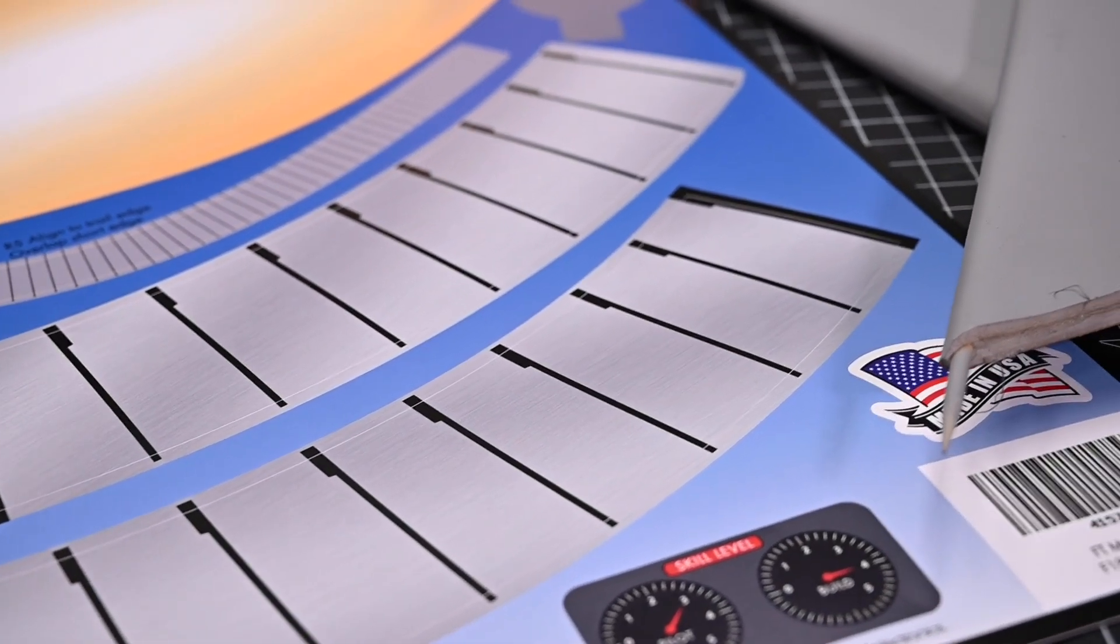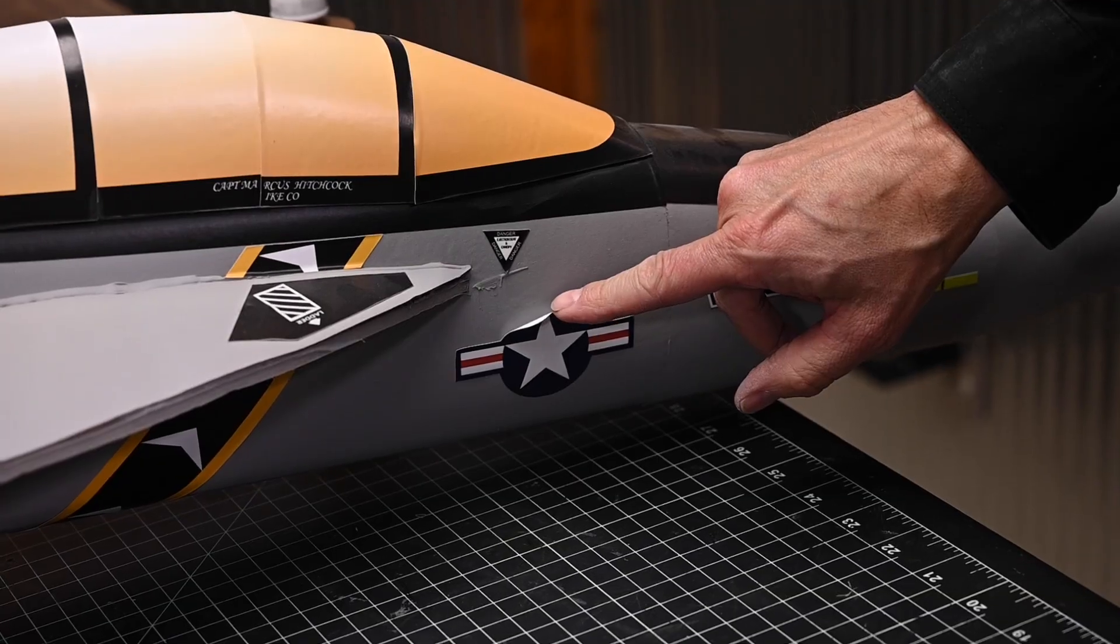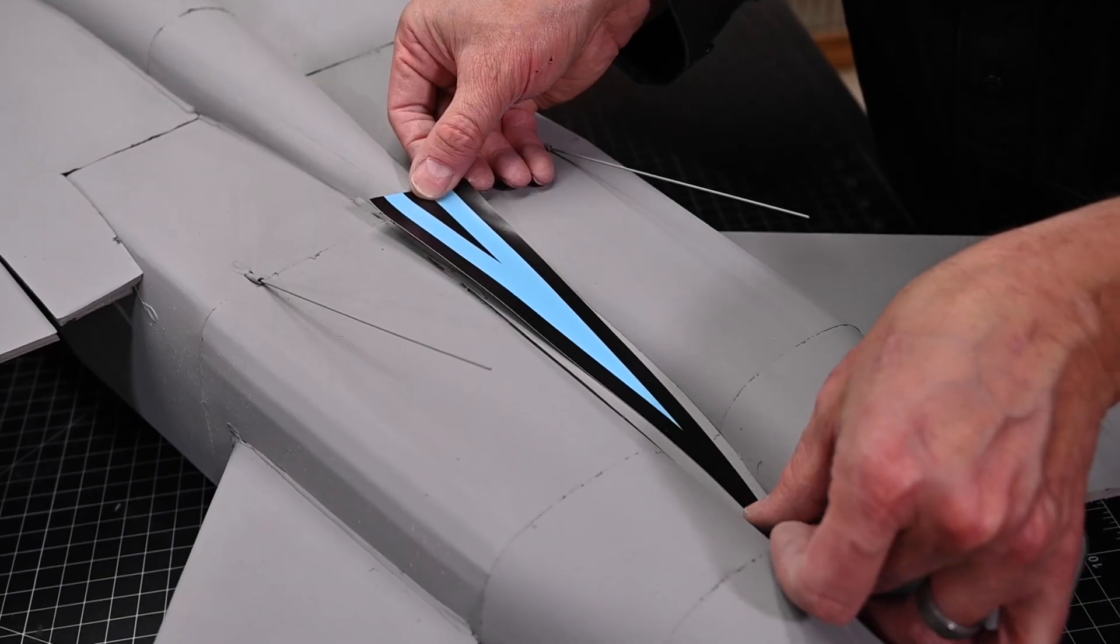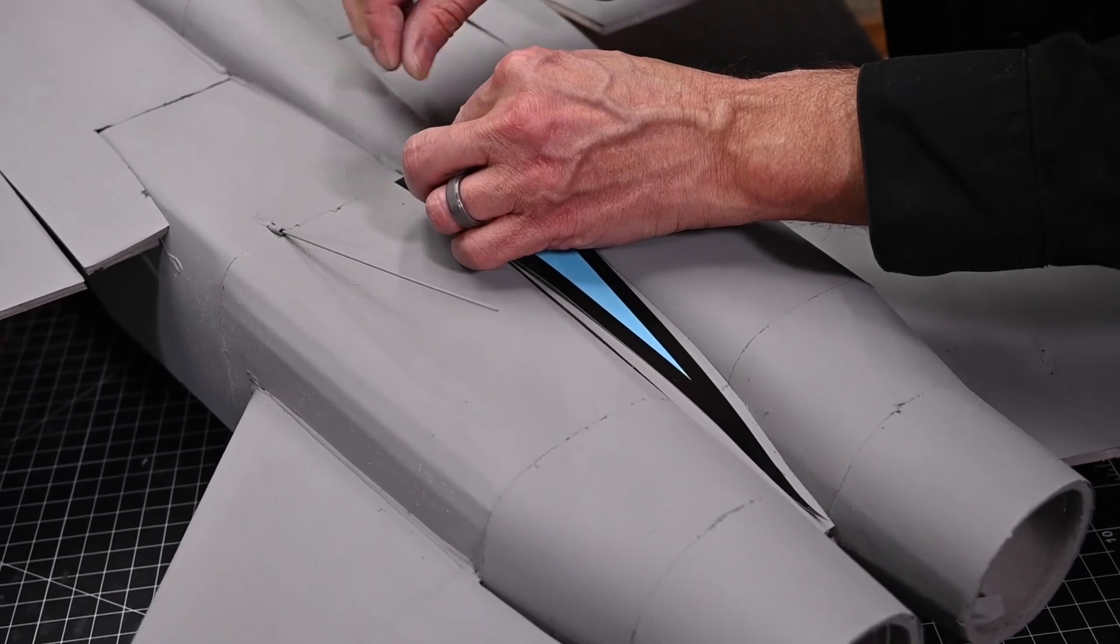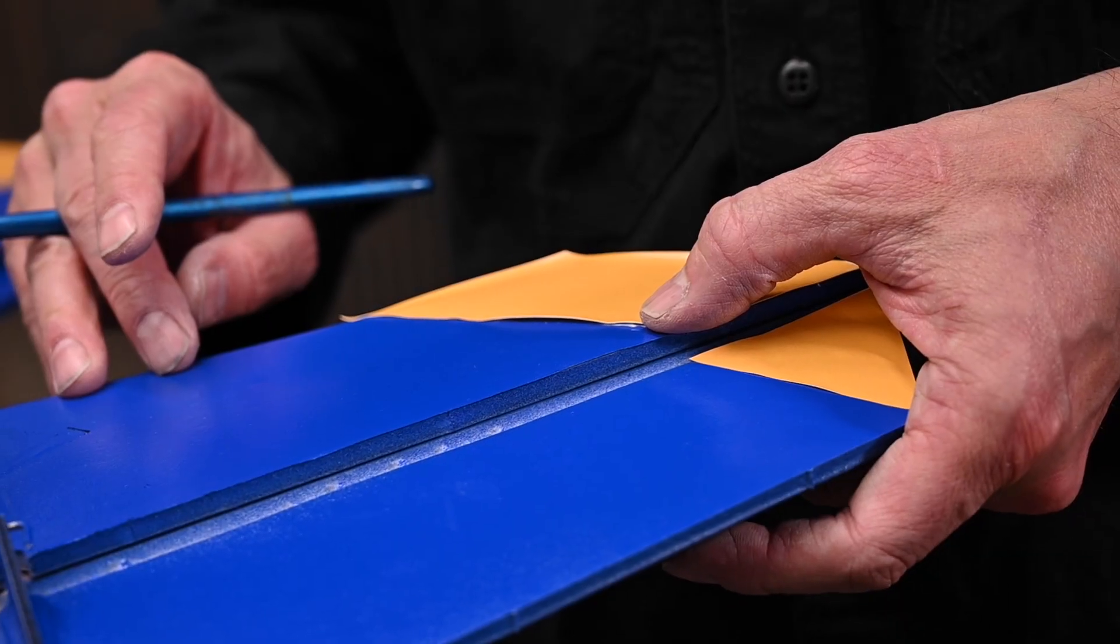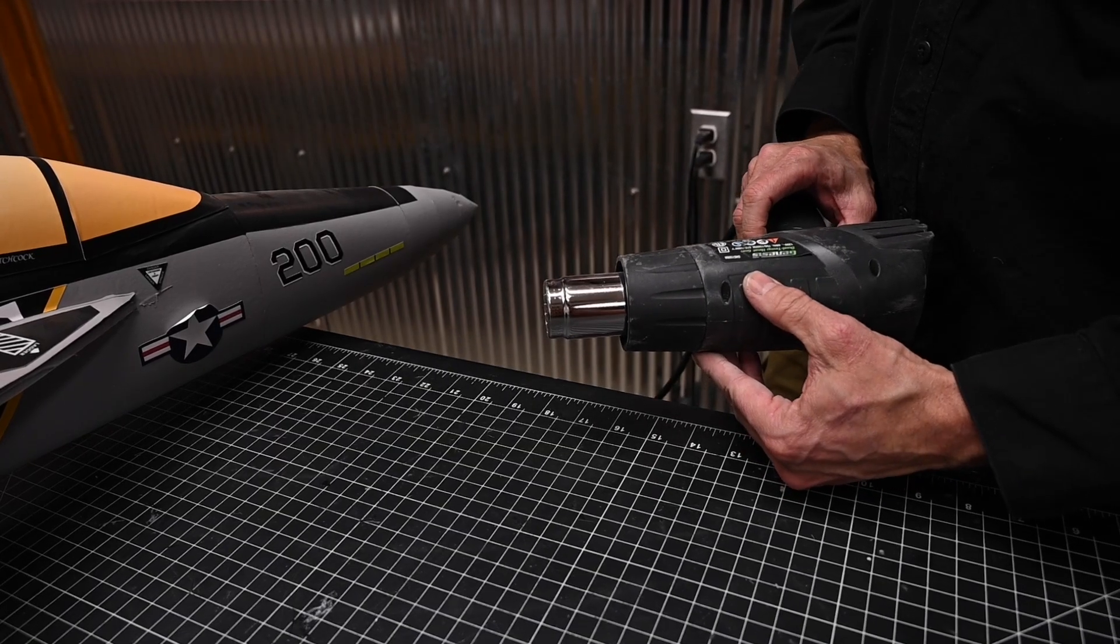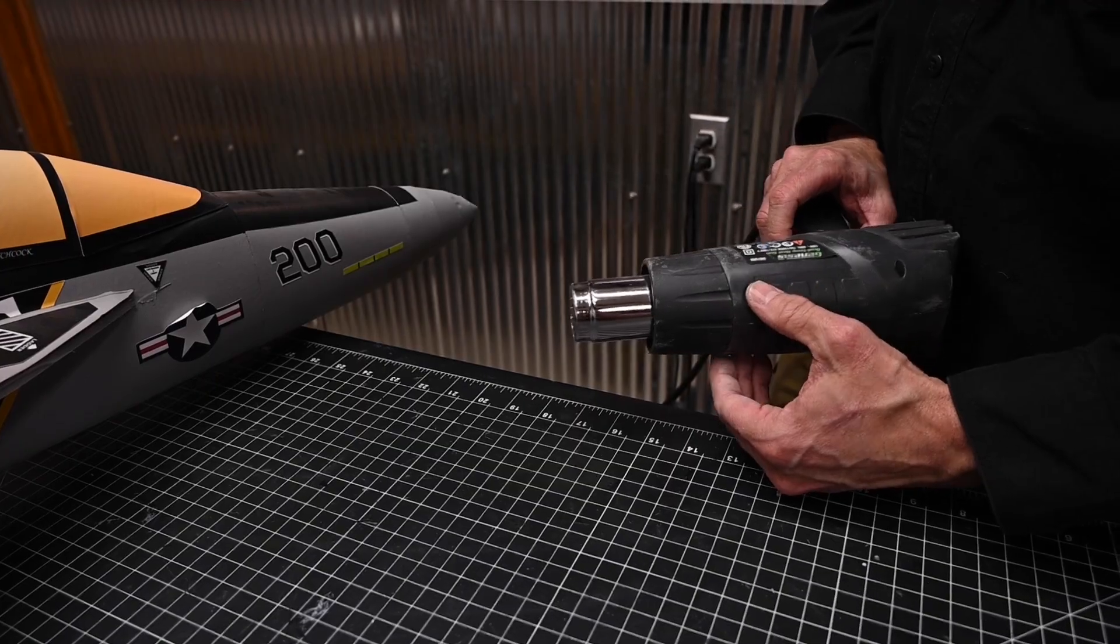With the non-permanent adhesive, one of the issues that you will likely run into is the decal not sticking well. Now there's a couple things that will contribute to this. One, if you apply the decal too many times, you're likely going to have an edge that will want to work its way up. And we'll cover how to get those edges to stay down later on in this video.